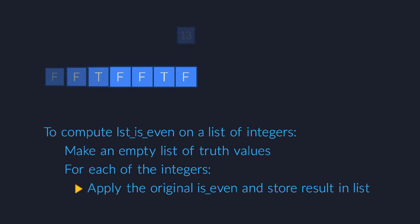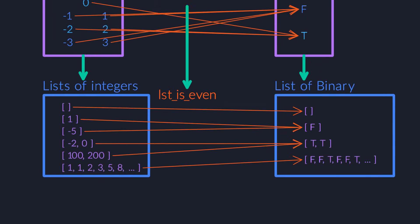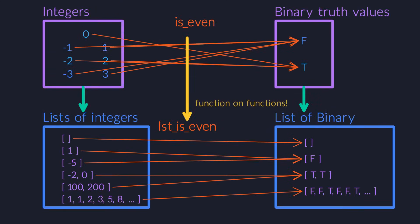So the functor operates not only on types, but also on arrows, on functions. It's a meta function. Of course I'm only showing a small part of the picture here. The list functor creates many more types, such as list of persons or even list of lists of integers — you get the idea.